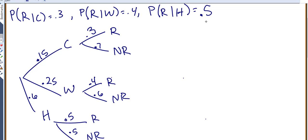Now that you have all that, then you can come over here and find the probabilities. So to find the intersections, you multiply along branches. So the probability of cold and rain would be 0.15 times 0.3. Probability of cold and not rain would be 0.15 times 0.7.